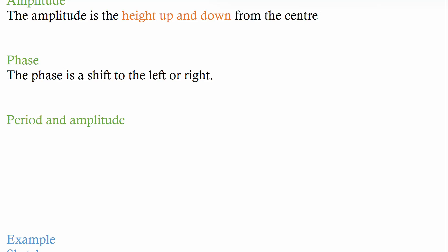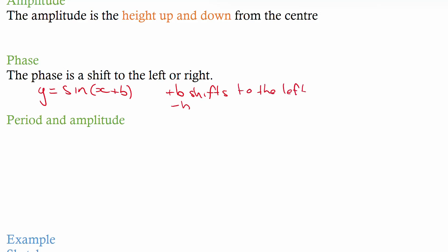When talking about phase, it's essentially shown by a bracketed expression. If you had y equals sine of (x plus b), the b value is your phase. A positive b shifts the graph to the left, and a negative b shifts it to the right. That's the same for cosine and tan.